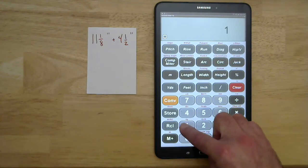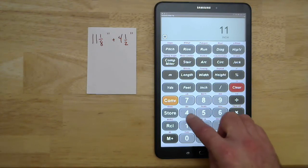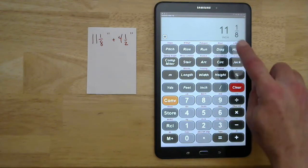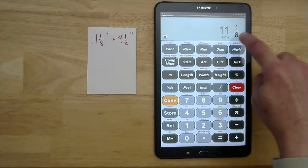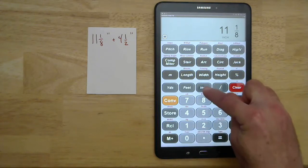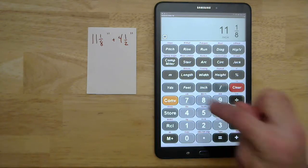Eleven inches and one-eighth. You see how it entered in eleven inches and one-eighth. So I did eleven, inch, one, fraction bar, eight.